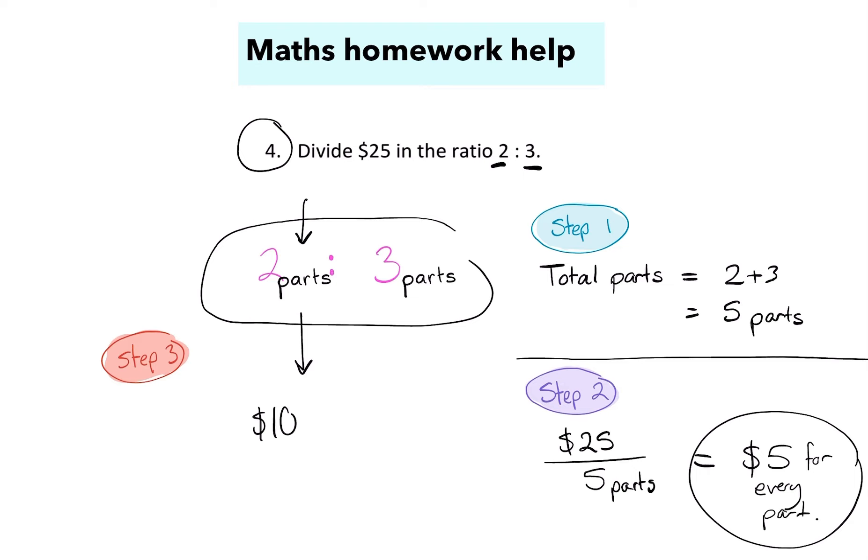And so what we're really working with to finish this one out is we're scaling the ratio. We're going to scale it up by multiplying both sides with $5. So my left-hand number becomes $10. My right-hand number, three times five, is $15. And we're done.